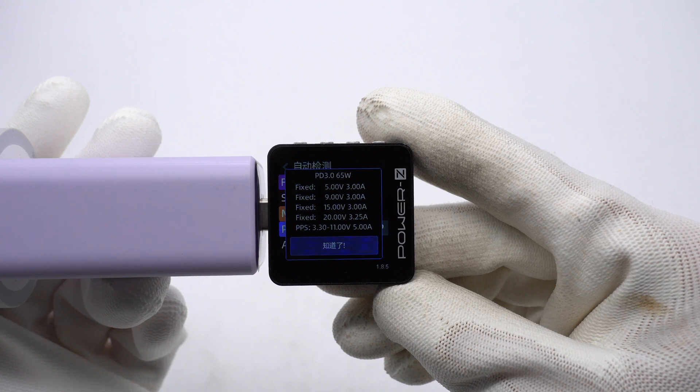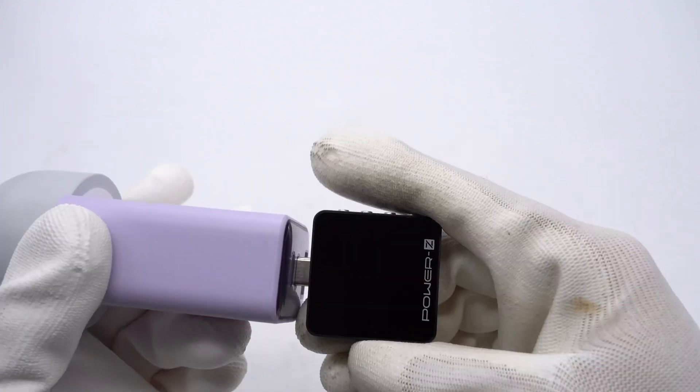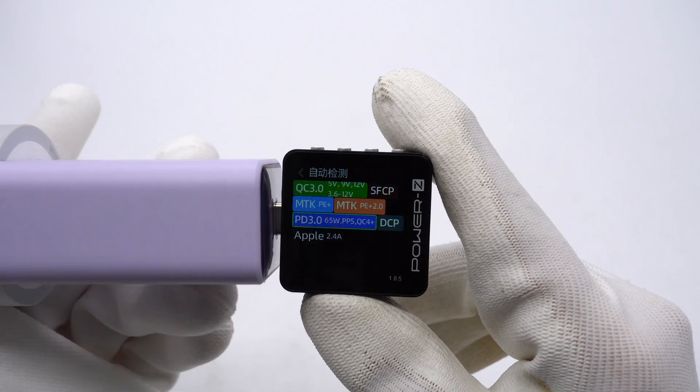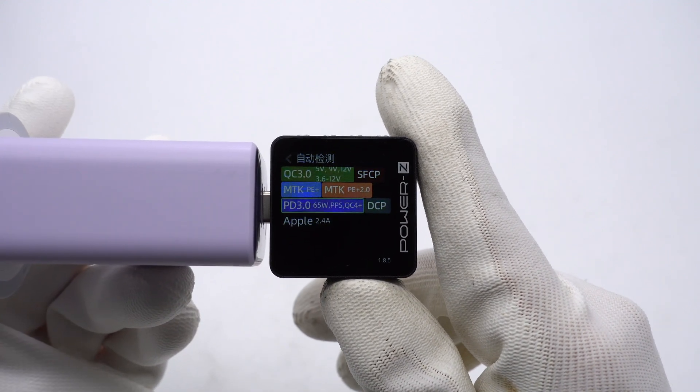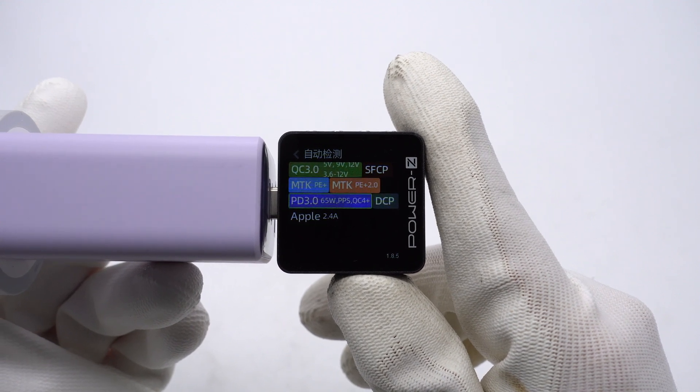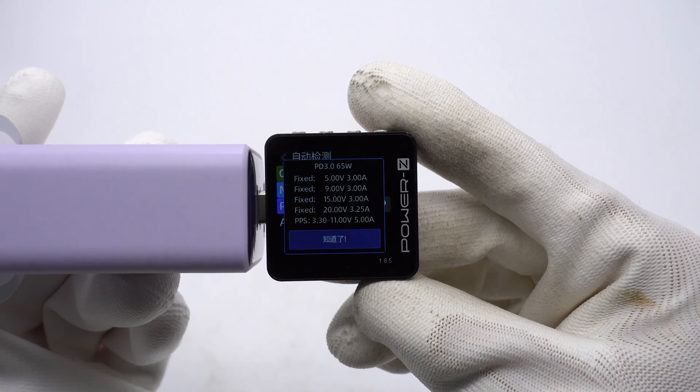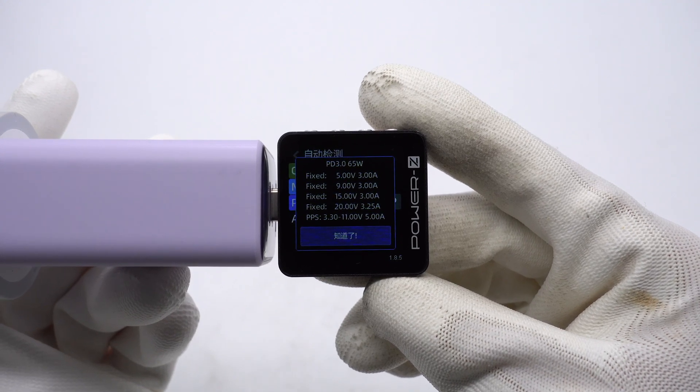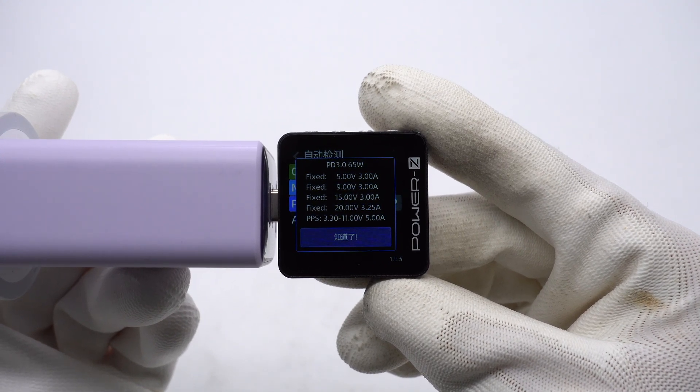The USB-C2 supports AFC, QC3.0, SFCP, PE2.0, PD3.0, PPS, DCP and Apple 2.4A protocols. And it has 4 fixed PDOs of 5V, 9V, 15V, 3A and 20V, 3.25A and a set of PPS.